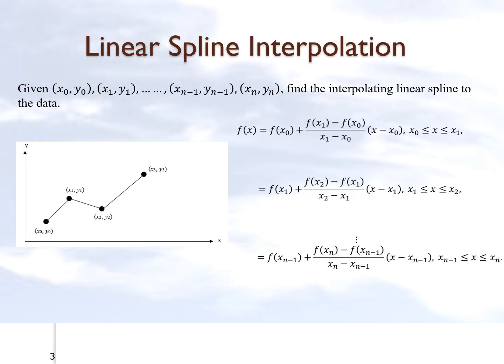Let's see how linear spline interpolation works. We are given n plus 1 data points. We will be drawing straight lines through two consecutive data points. In this case, x naught comma y naught and x1 comma y1, then we'll draw another straight line going from x1 y1 to x2 y2.